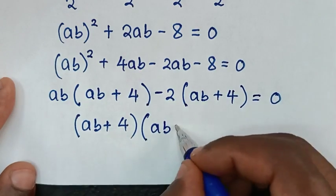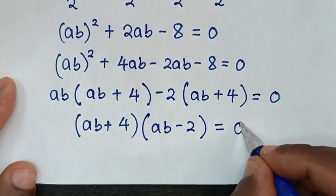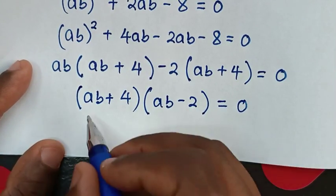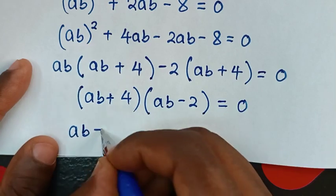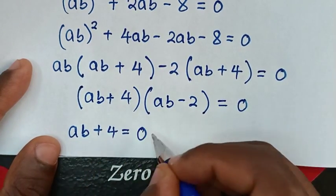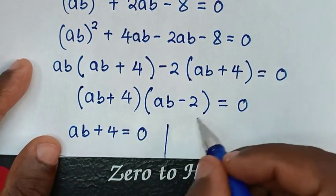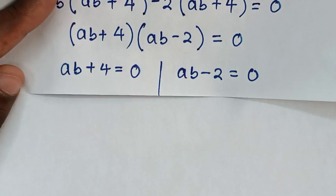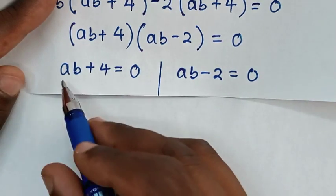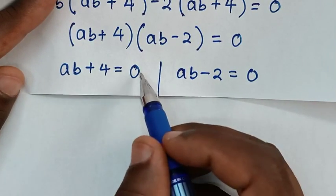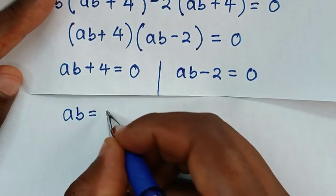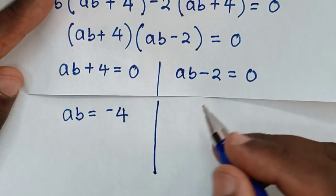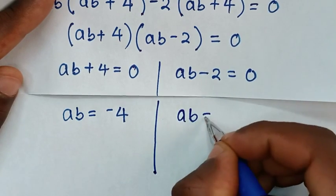In the next step, we have two solutions: the first solution is ab + 4 = 0 and the other is ab - 2 = 0. From the first solution, ab = -4, and from the second solution, ab = 2.